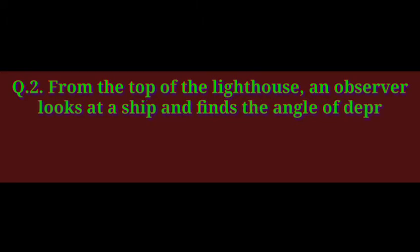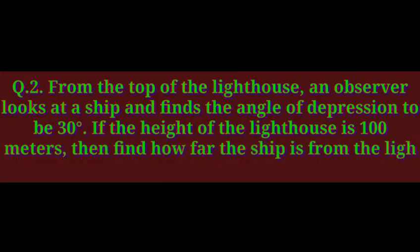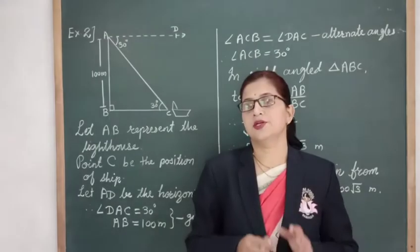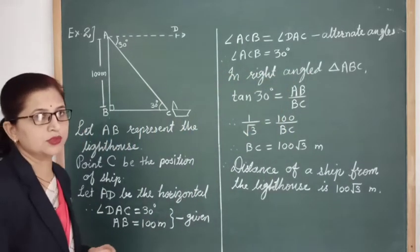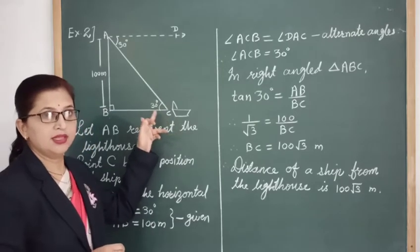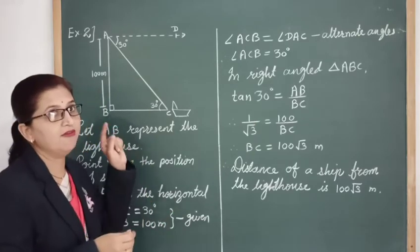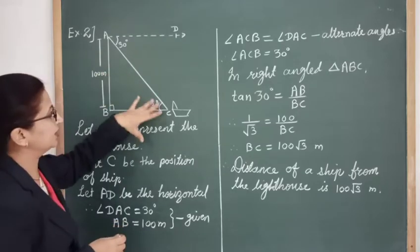Let's see the next example. From the top of a lighthouse, an observer looks at a ship and finds the angle of depression to be 30 degrees. If the height of the lighthouse is 100 meters, find how far the ship is from the lighthouse. In this question, the observer is standing at the top of the lighthouse and looking at the ship below, so there will be an angle of depression. We represent the lighthouse and ship in the form of a figure.